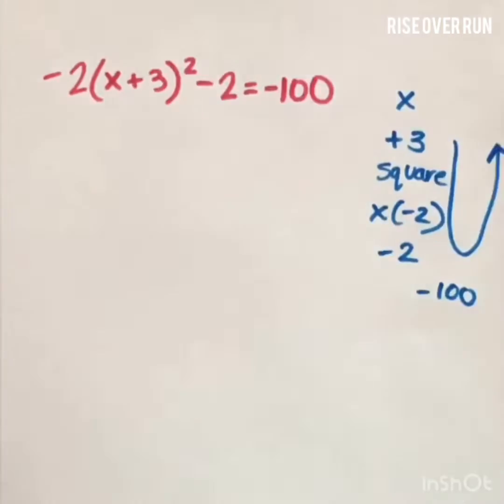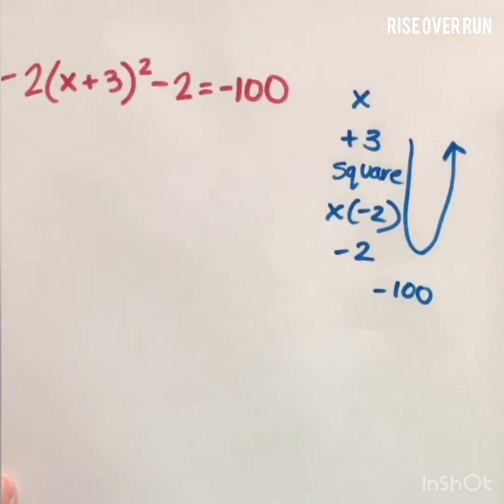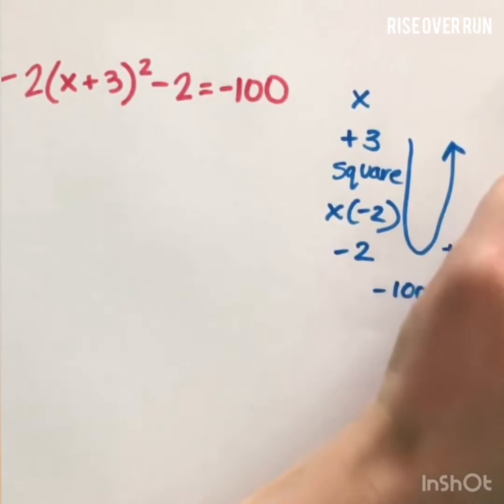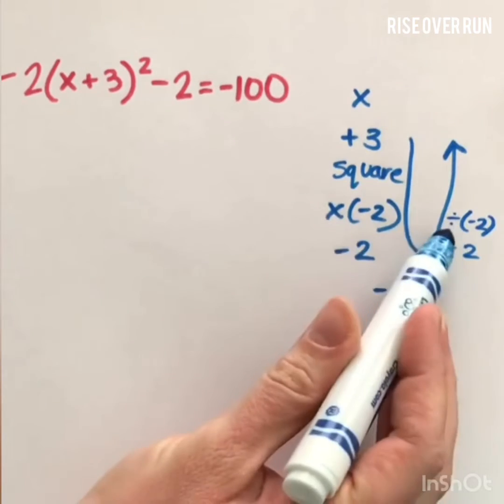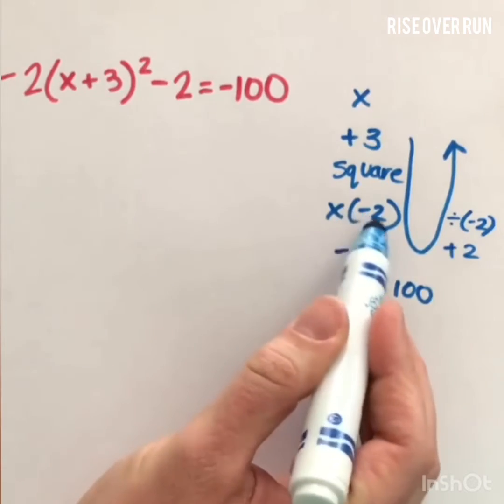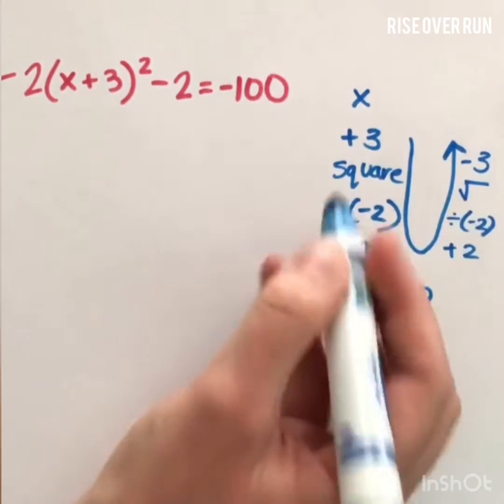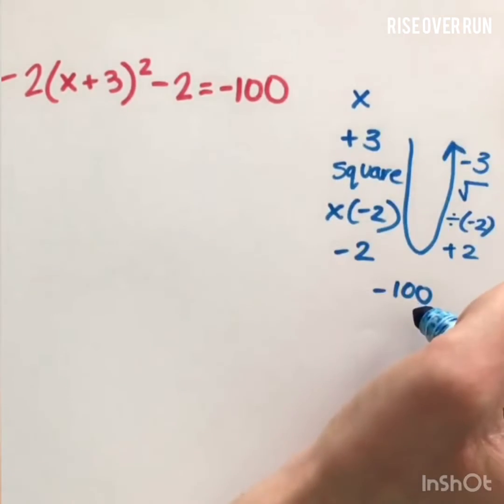So if we are to undo all of these things, we need to use inverses and go backwards. Instead of subtracting 2, we'll add. Instead of multiplying by negative 2, we will divide by negative 2. Notice it's just the operation that changes, not the sign of the number. Instead of squaring, we square root. Instead of adding 3, we subtract 3. If we do all these things to negative 100, we'll start at the bottom of our list here and add 2 to both sides.